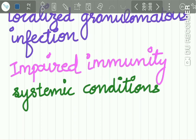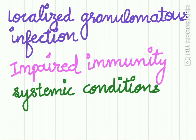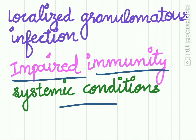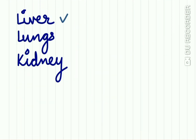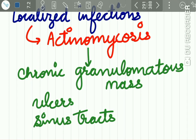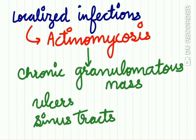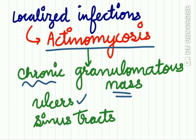The clinical features: it is usually a localized granulomatous infection of the skin or mucosa, reported in patients with impaired immunity and systemic conditions such as diabetes, cystic fibrosis, or HIV. The liver, lungs, and kidneys are affected, and the disease may be fatal if these organs are involved. Localized infection of botryomycosis mimics actinomycosis closely, producing a chronic granulomatous mass which ulcerates and may form sinus tracts.